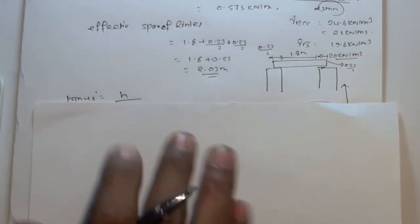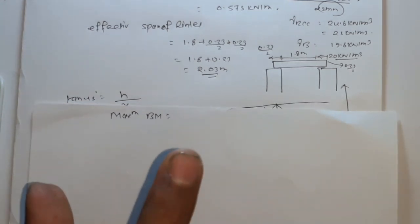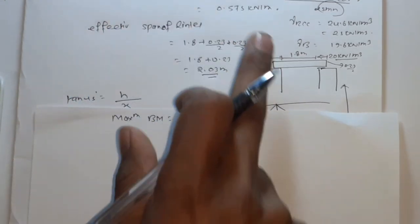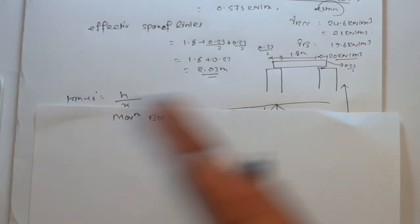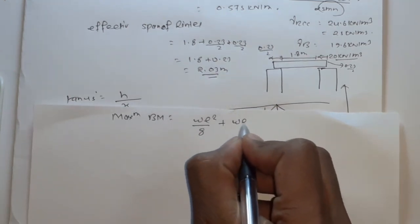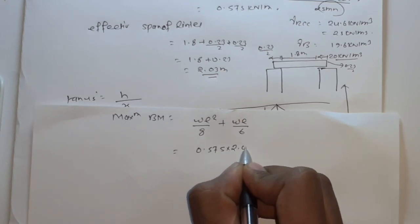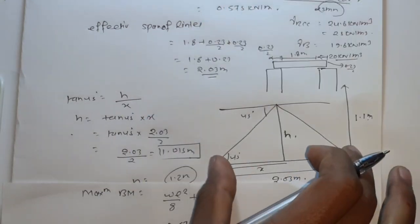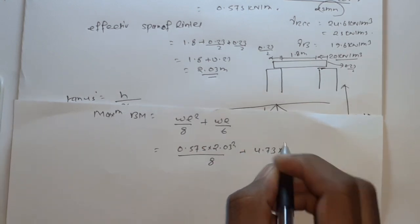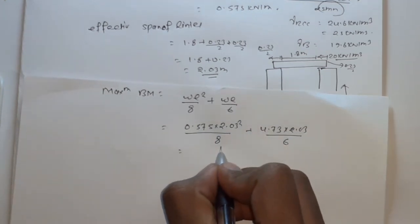Now we find the maximum bending moment. The total load consists of two parts: the self-weight of the lintel (UDL) and the triangular portion from the brick load. Maximum bending moment equals wL² by 8 for the UDL portion plus WL by 6 for the triangular portion. Using effective span 2.03 m: the UDL term uses 0.575 into 2.03² by 8, and the triangular term uses 4.73 into 2.03 by 6, giving approximately 1.9 kN·m.